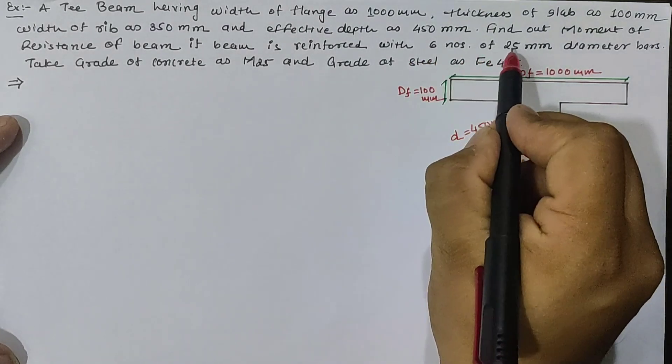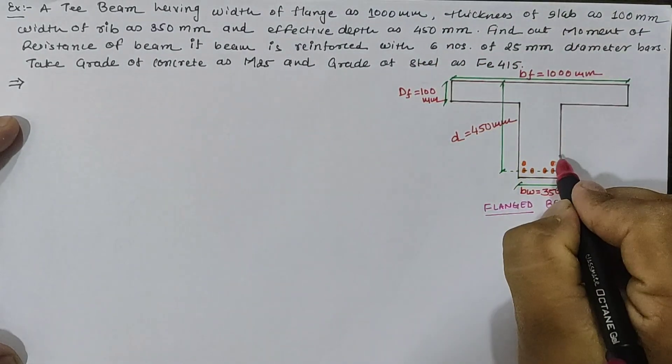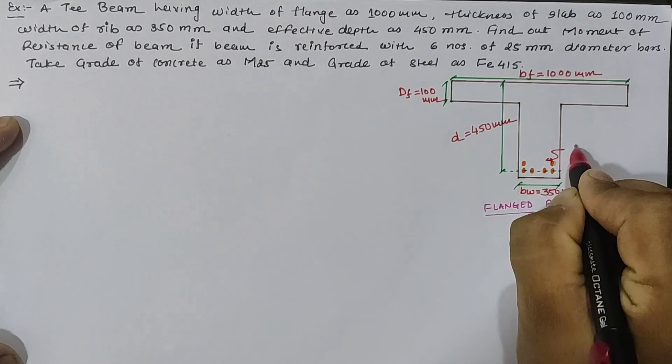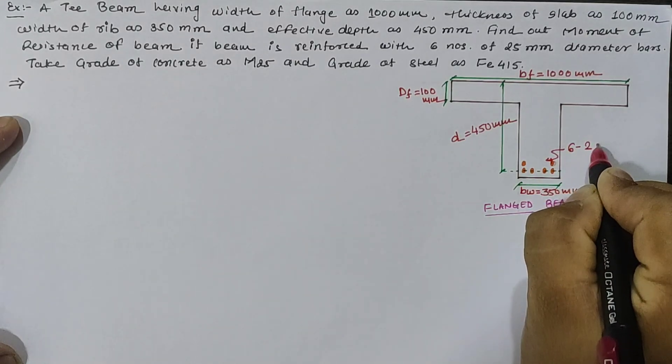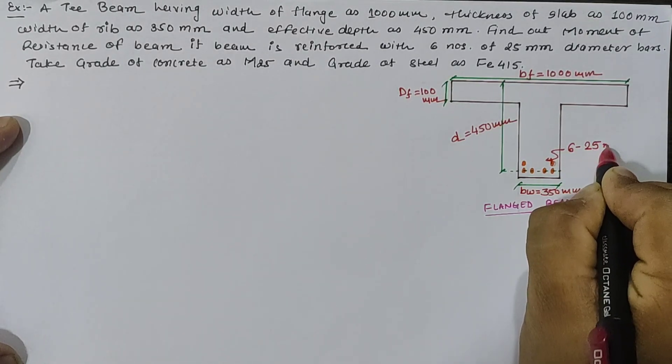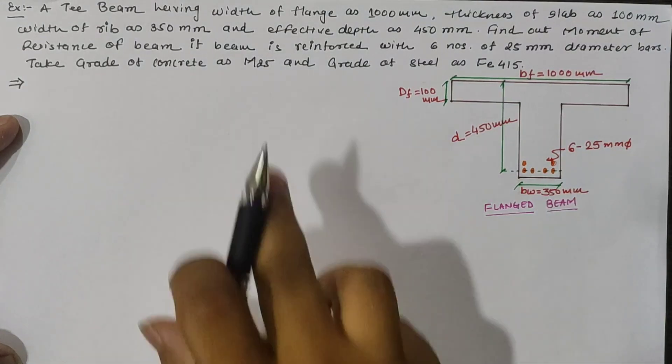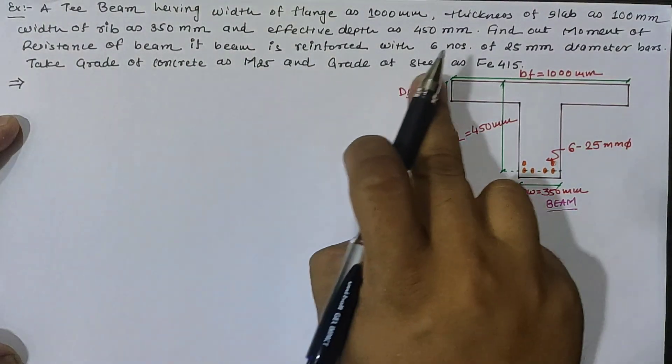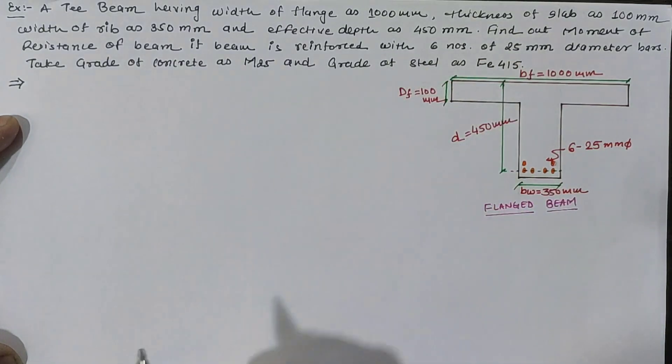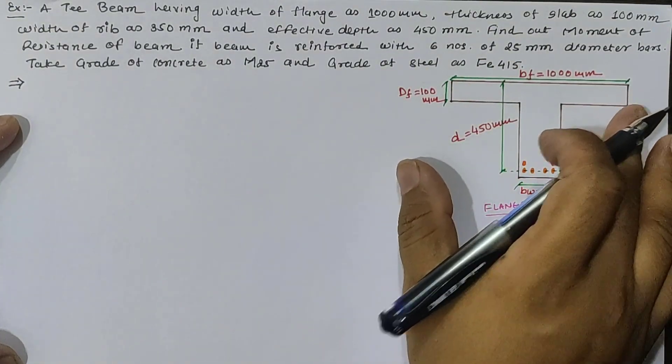We have given six numbers of 25 mm diameter bar as reinforcement. We have given M25 grade of concrete as well as Fe415 grade of steel.